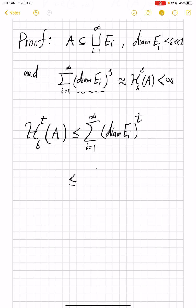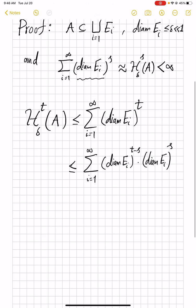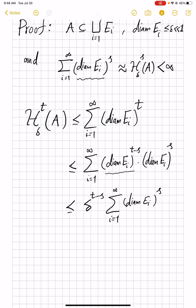You have raised very tiny quantities to a bigger power, so they become smaller. We can precisely see how much smaller. You can write diameter(E_i) to power t as diameter(E_i) to power (t minus s) multiplied by diameter(E_i) to power s. Now t minus s is positive, and these diameters are numbers less than delta, so each one of them will be less than delta to the power (t minus s), and then you have the summation of diameter(E_i) to power s, which is pretty much close to H^s_delta(A).